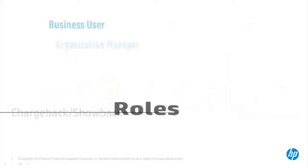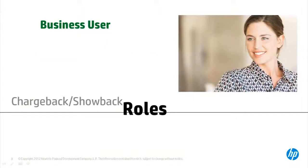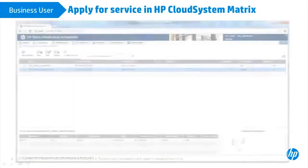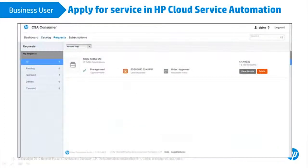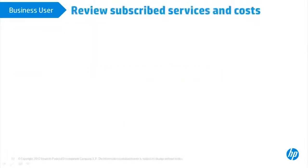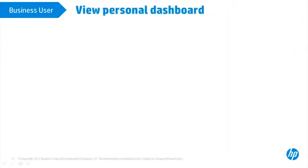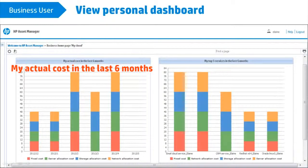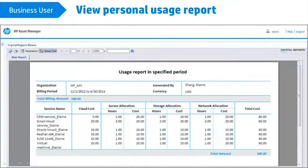Suppose you are a business user of HP Asset Manager Cloud System Chargeback. You apply for services from a cloud service system like HP Cloud System Matrix or HP Cloud Service Automation. After usage data is imported, you can review your cloud services and related costs in Cloud System Chargeback. In the Personal Business homepage, you can quickly view your actual costs and top five services in the last six months, and you can read the usage report which details your billing information.